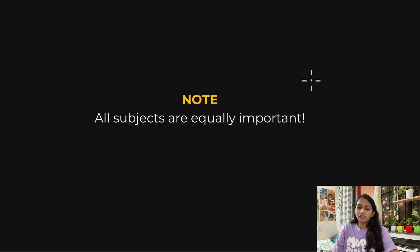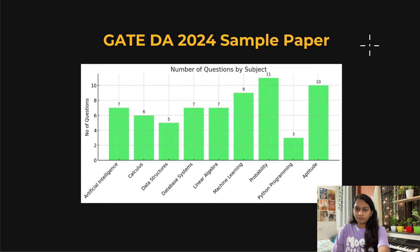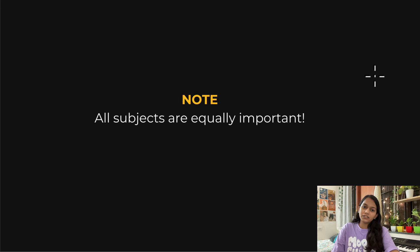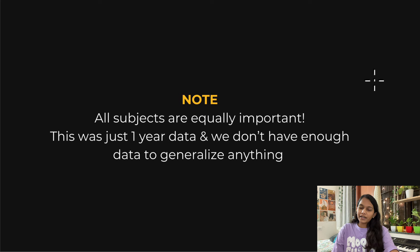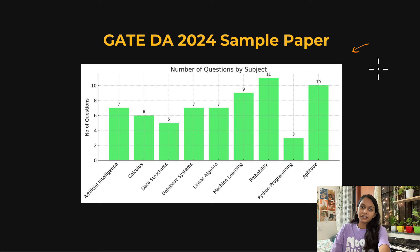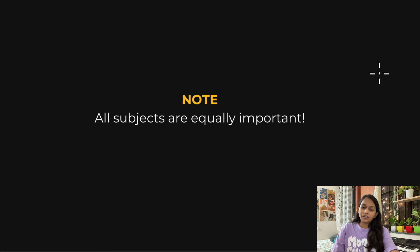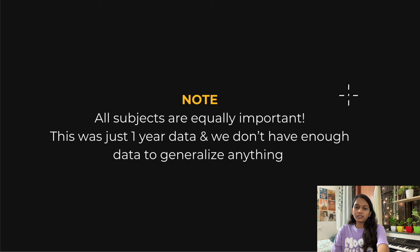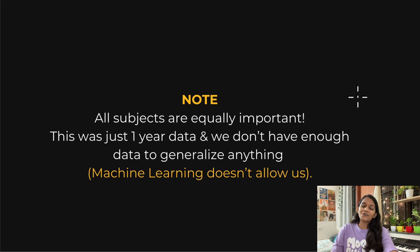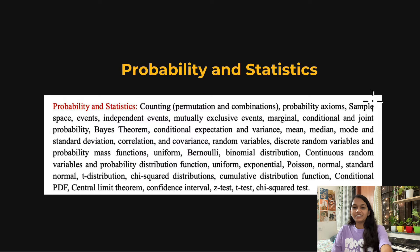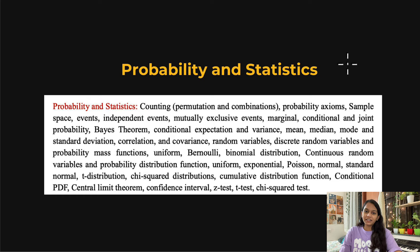Before we move ahead, I want to clarify that I've shown this distribution just so you can see last year's weightage — but all subjects are equally important. Don't rely on this distribution to judge which subject is important or not. GATE DA just started last year, so we only have one year of data and we can't generalize from it. Machine learning and probability had the most weightage last year, but next year any other subject could have more weightage. So treat all subjects as equally important.